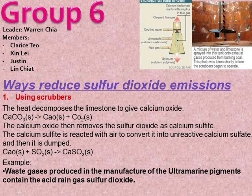The first way to reduce sulfur dioxide emissions is by the use of scrubbers that chemically trap and remove sulfur dioxide emissions from the gases before they are released into the air and turn them into sludge and solid waste. Scrubbers are large towers in which aqueous mixtures of lime or limestone absorbers are sprayed through the emissions, known as flue gases,